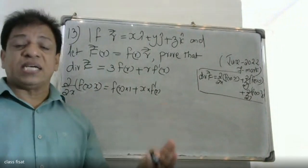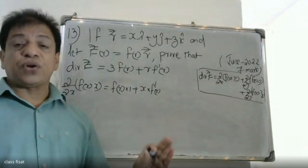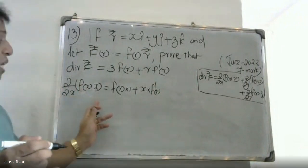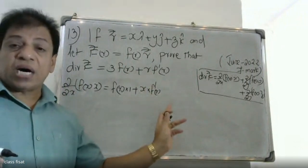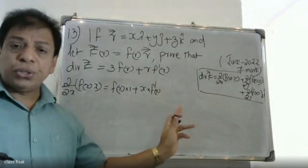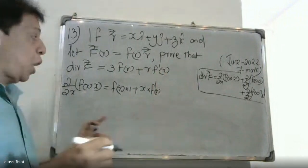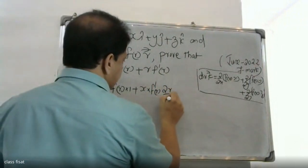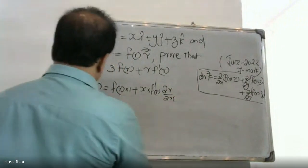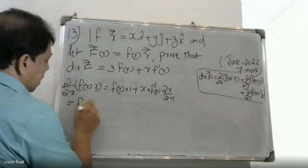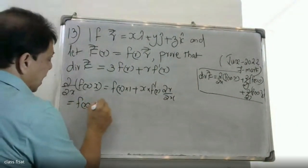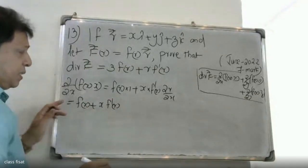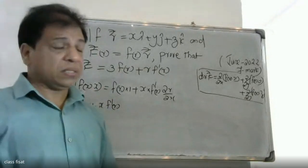Now, r contains x, y, and z as variables, so r is a dependent variable. Differentiating f(r) with respect to x using the product rule gives f'(r) times ∂r/∂x.